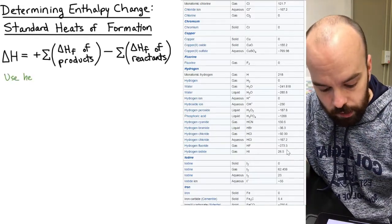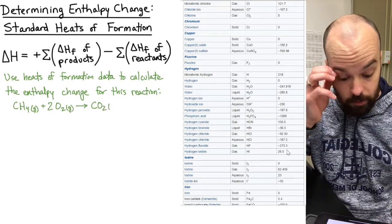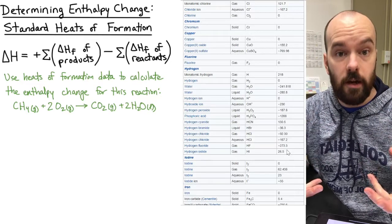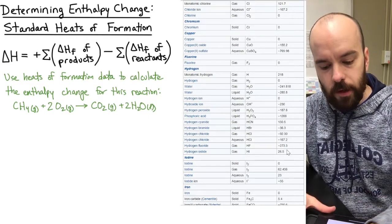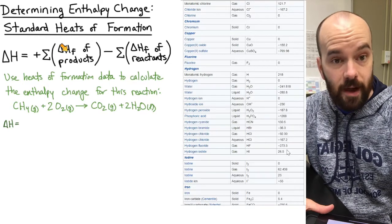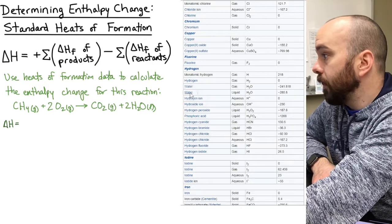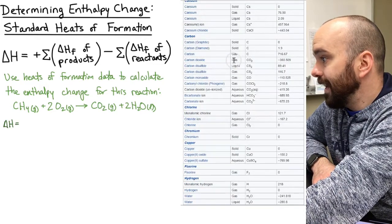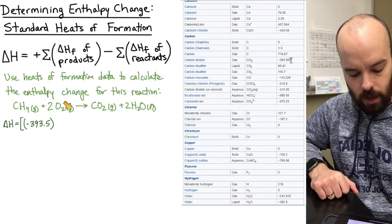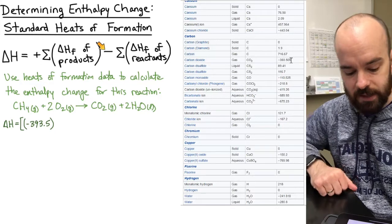Here's the problem: use heats of formation data to calculate the enthalpy change for the combustion of methane — CH₄(g) + 2 O₂(g) → CO₂(g) + 2 H₂O(l). We set up the equation matching our formula. For the products side, the first product is CO₂(g). Looking that up on Wikipedia, carbon dioxide gas is negative 393.5 kJ/mol. I'll use square brackets to separate products from reactants, which helps when distributing the negative sign.